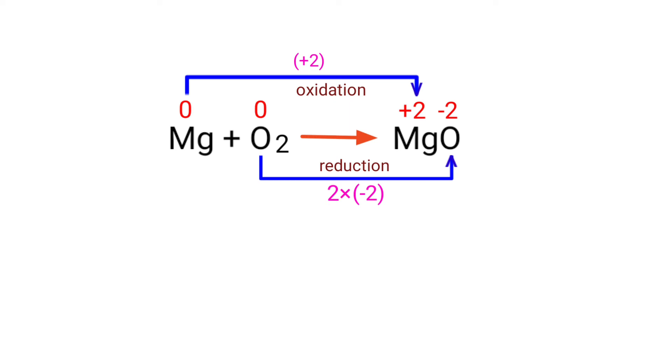Now you can make the increased oxidation number equivalent to the decreased oxidation number. To do this, you can multiply the increased oxidation number by a coefficient of 2.